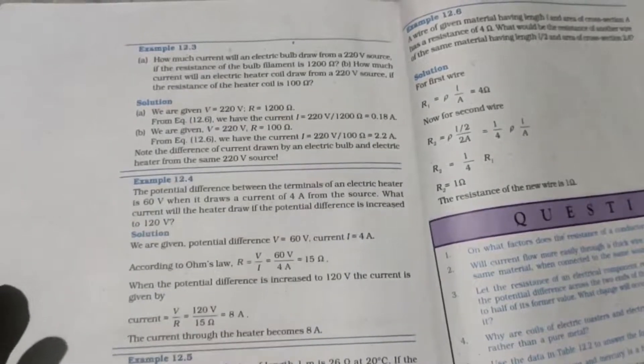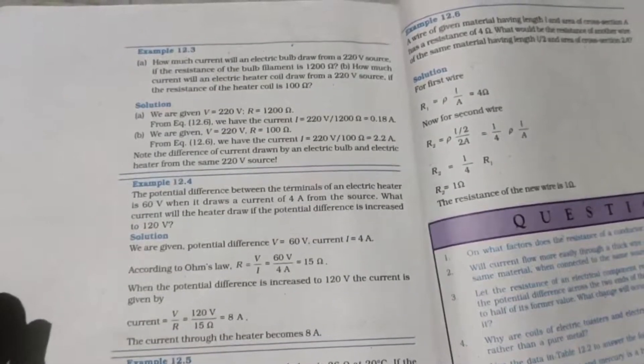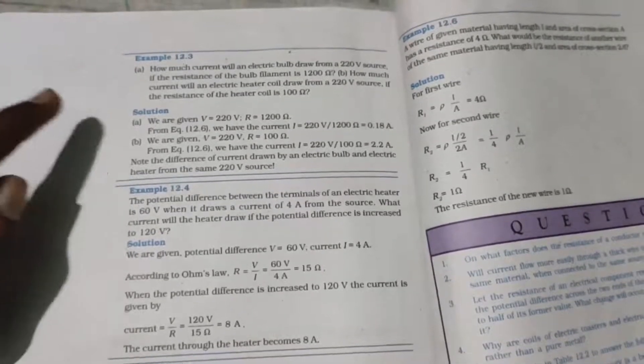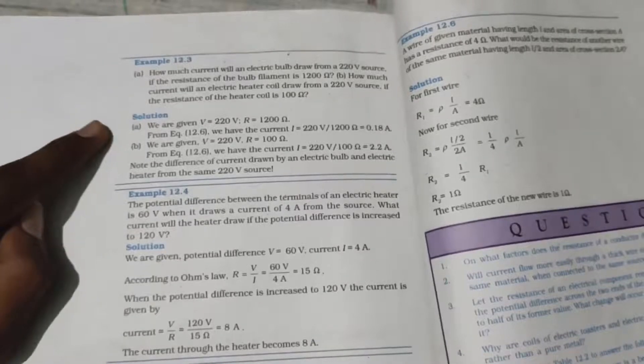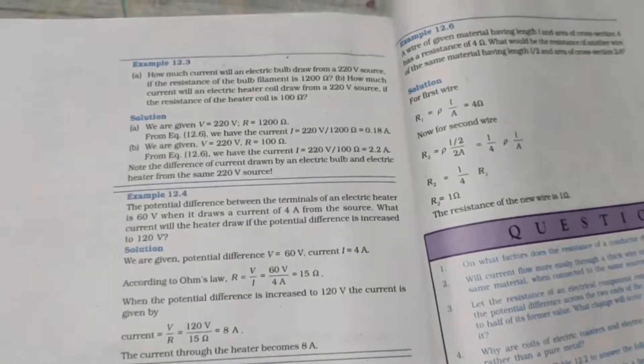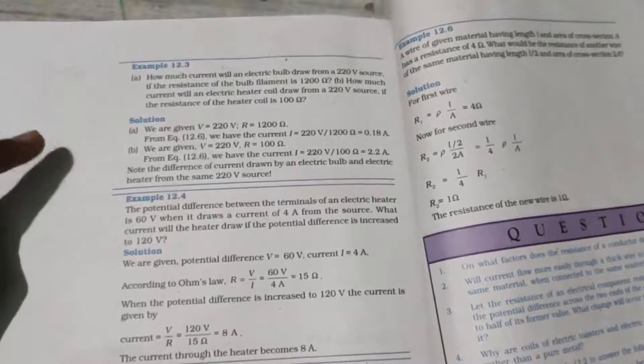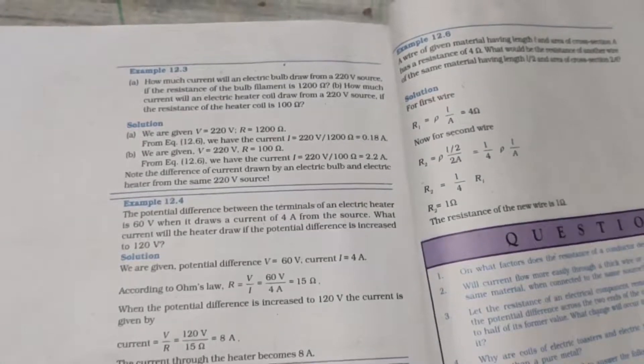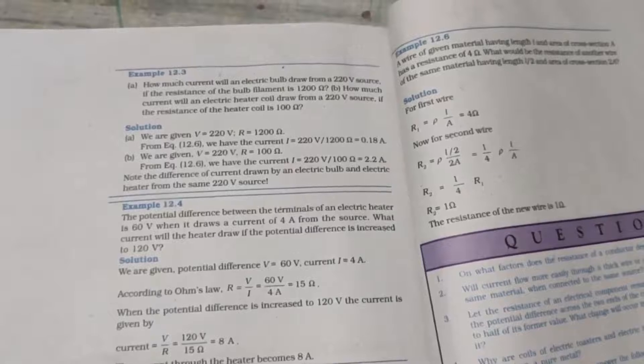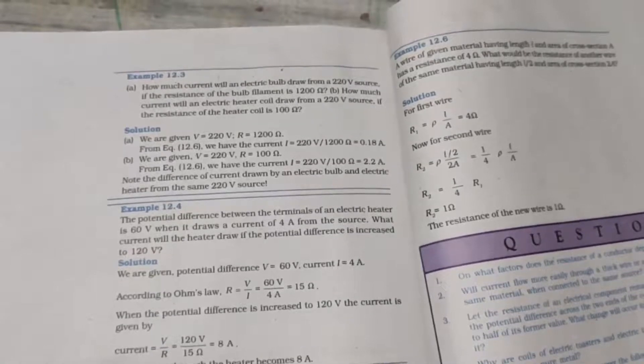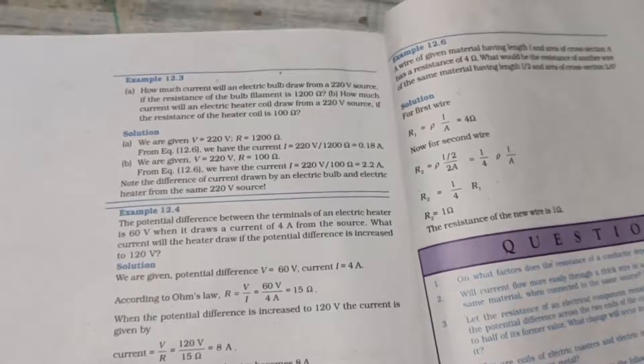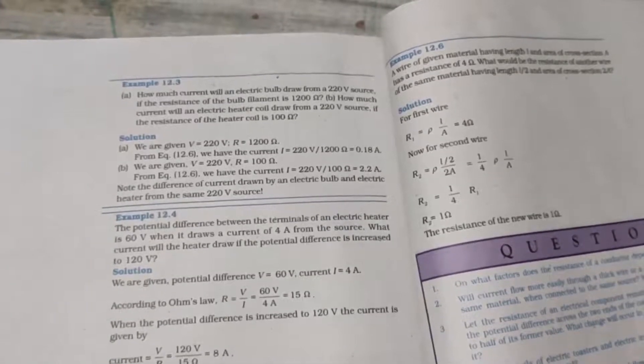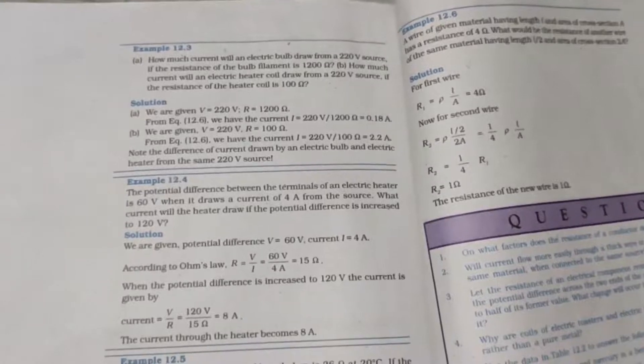We will be seeing Example 12.4 in the next class. If you have any doubt in this Example 12.3, you can always let me know in the comment section. We also have Telegram group and WhatsApp group for your doubts and queries and for instant notifications. You can join there, the link is in the description box. If you want anything, you can ask me in the comment section. Do give your feedback. Bye bye kids.